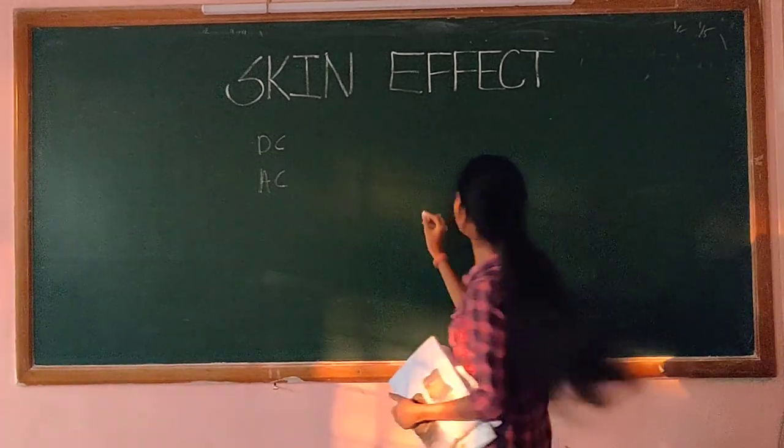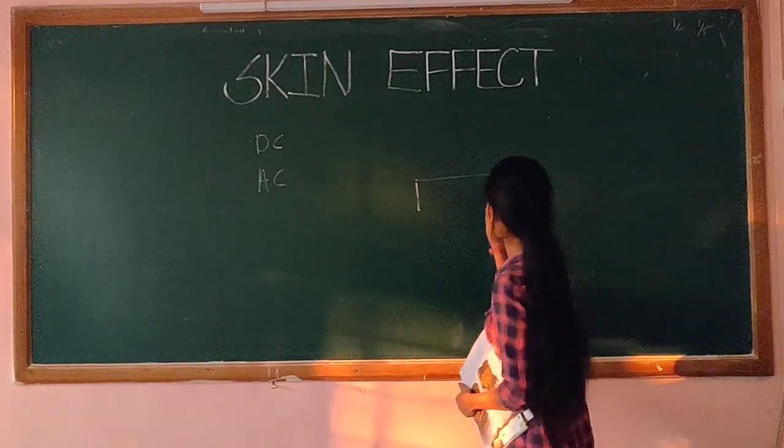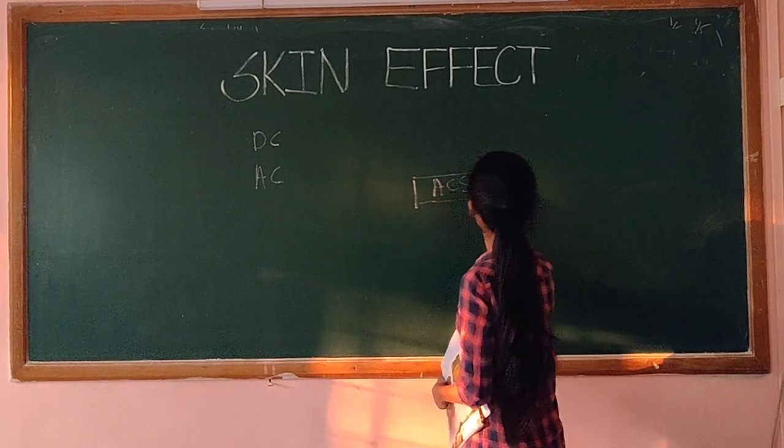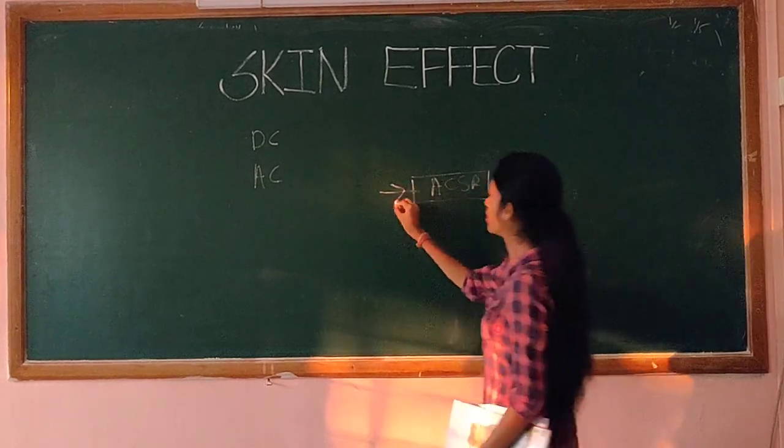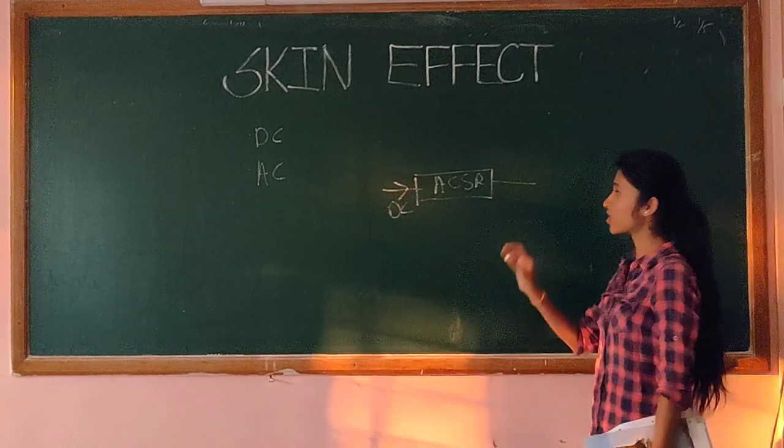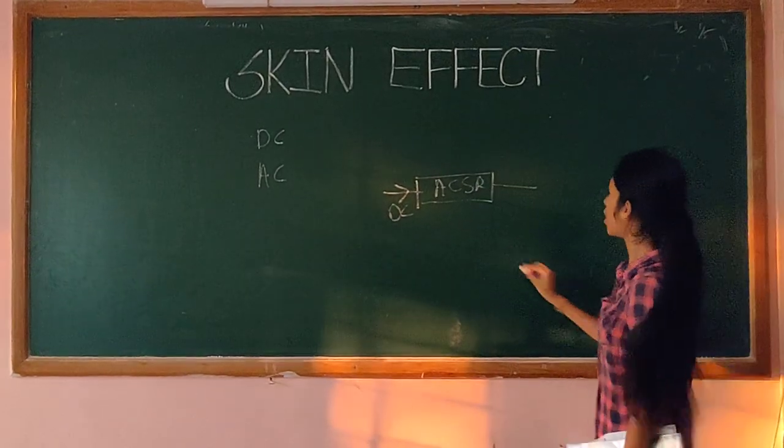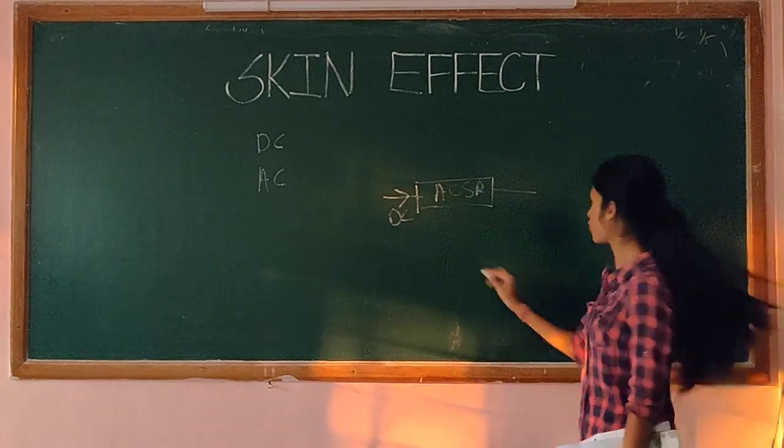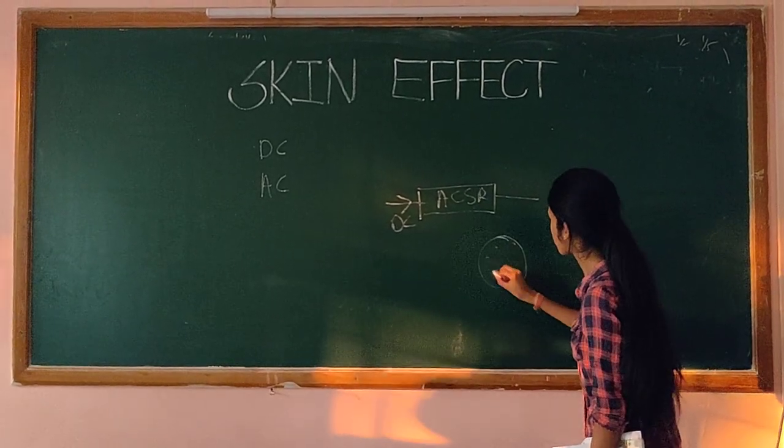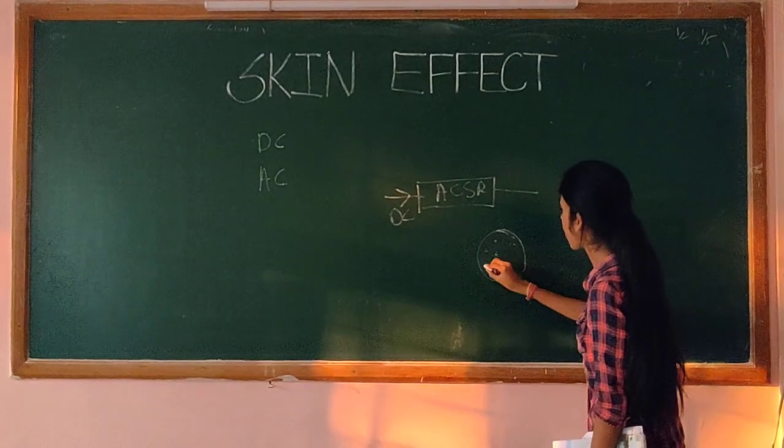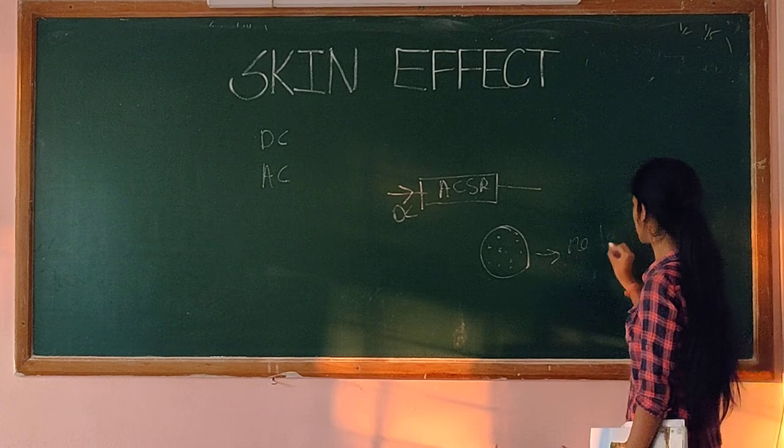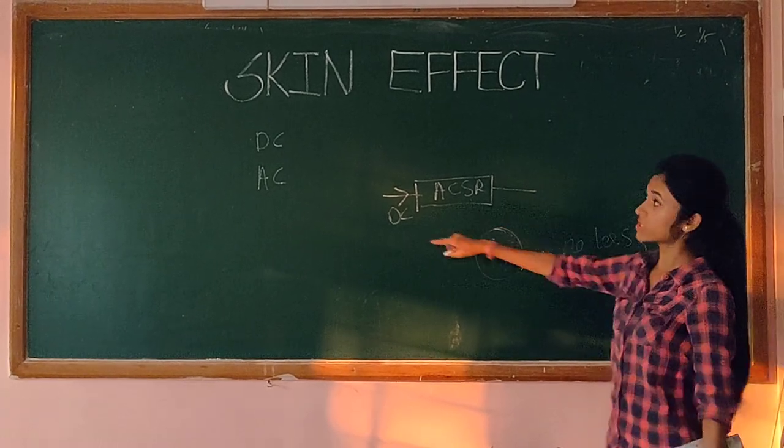Let's take a conductor which is ACSR and DC current flows through it. The flux distribution in this conductor is uniform. Consider this is the cable and flux distribution is uniform in this case and there is no loss in DC.